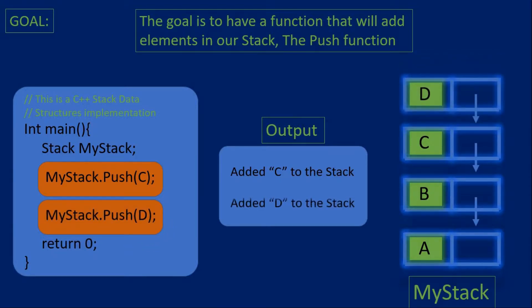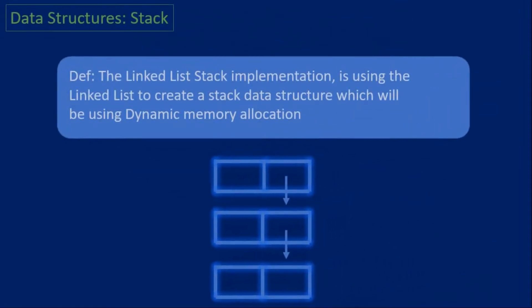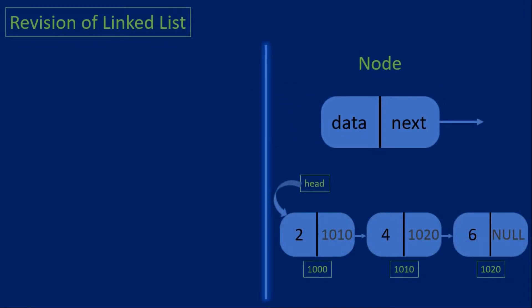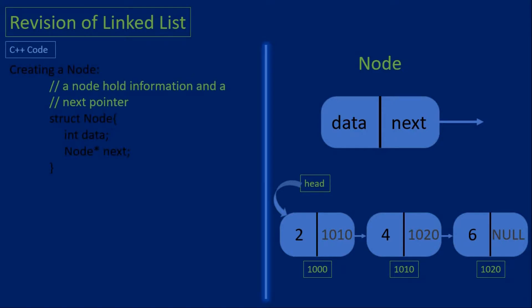In this stack implementation, we will be using the linked list data structure. The linked list uses dynamic memory allocation, so we don't need to know the size of the stack before we compile the code — we can add elements dynamically. Since we'll be using the linked list, let's have a quick revision. A node can hold data and also point to the next node, and we use these to create a linked list by connecting them.